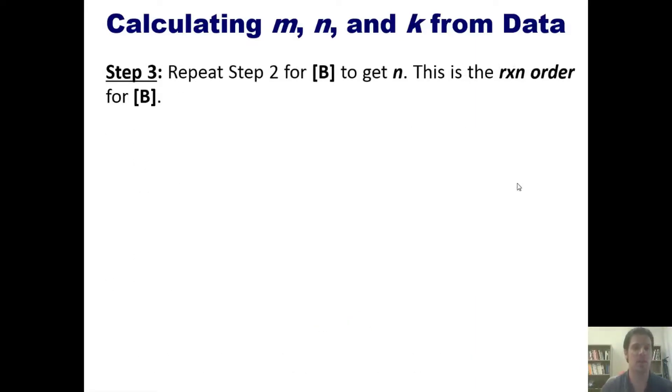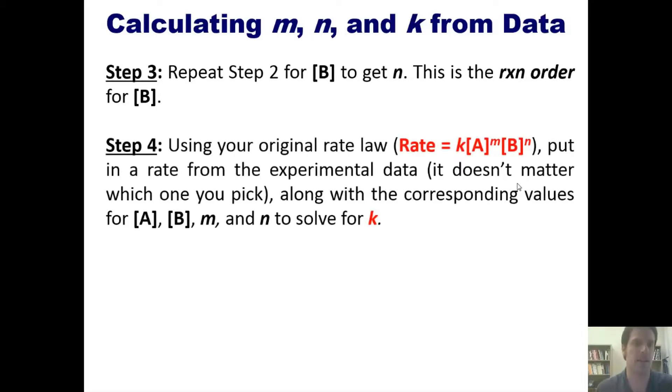Step three: repeat step two for B in order to get N. This gives you the reaction order for B. Step four: using your original rate law, shown here in red, put in a rate from the experimental data. It doesn't matter which one you pick, along with the corresponding values for A, B, M, and N in order to solve for K. Got it? Probably not. Let's go ahead and do an example.